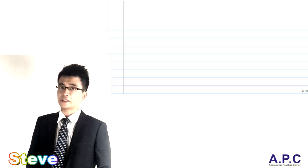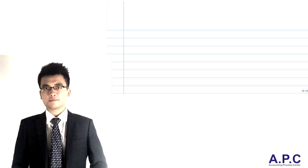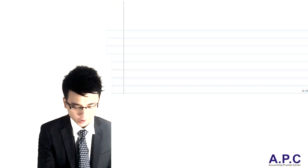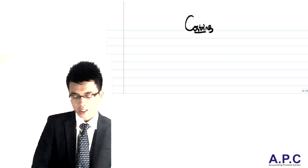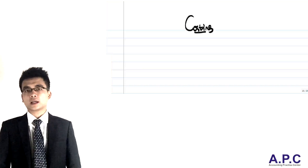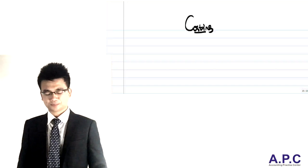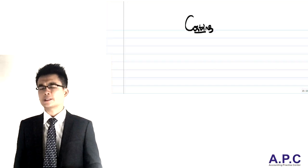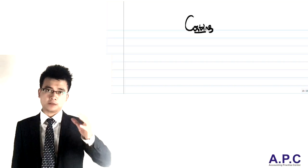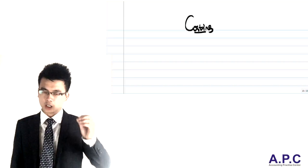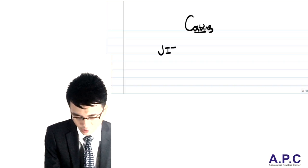Hi, this is Steve from ACCNAPC.com. What we're going to do today is have a look at something called costing. There are lots of costing techniques that we can use in establishing costs for each of the individual products. What we're trying to do in this particular section, from a service perspective, is start from the just-in-time system.